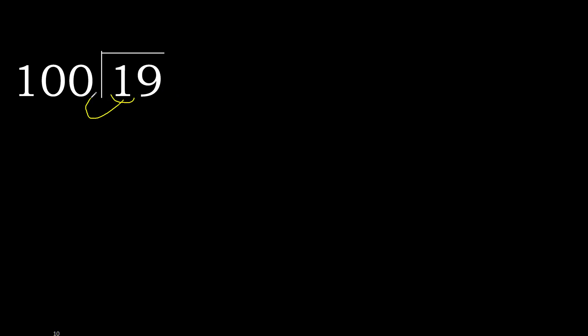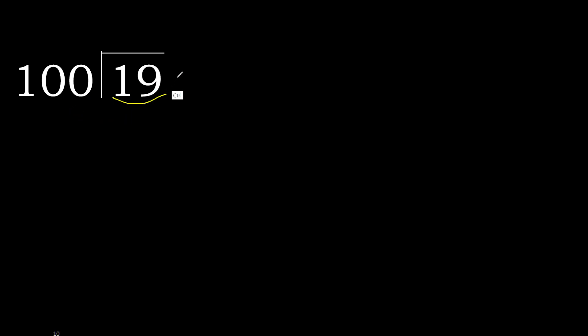19 divided by 100. 1 is less, therefore next. 19 is less, therefore next. That is not a number, therefore complete. Always complete with 0.